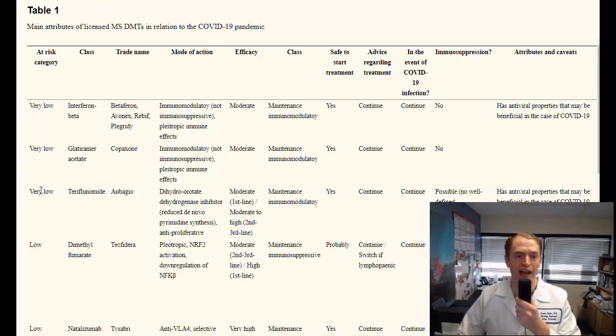They group these different agents into categories. So they think that the following agents are very low risk: Interferon beta products, such as Betaseron, Avonex, Rebif, and Plegridy, glatiramer acetate products, such as Copaxone and Glatopa, along with teriflunomide or Aubagio.